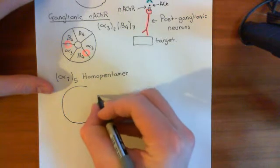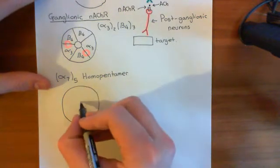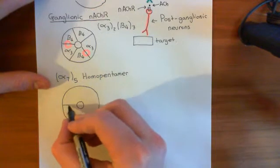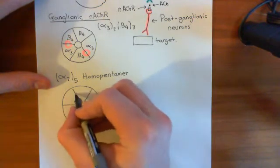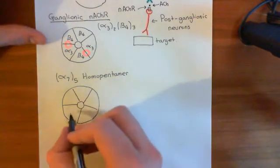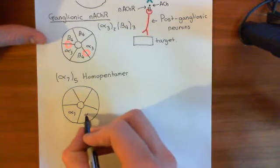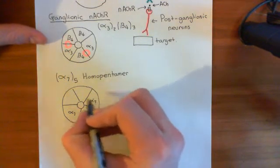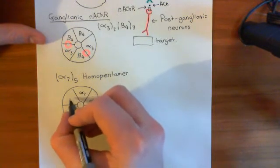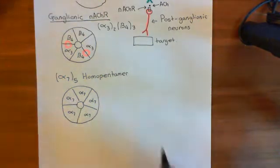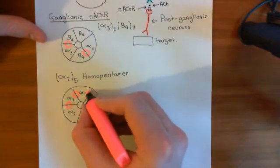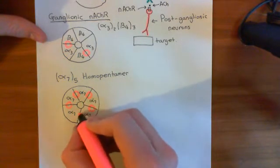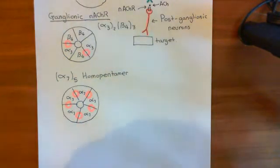If we draw one of these cartwheel drawings where we're looking at the nicotinic acetylcholine receptor from the extracellular aspect, here's the first subunit, second, third, fourth, fifth. In every single socket in this case you'll have an alpha-7 subunit. The alpha-7 homopentamer differs from all examples we've seen so far in that it doesn't have two acetylcholine binding sites — instead it has five, one at every junction between two neighbouring alpha-7 subunits.